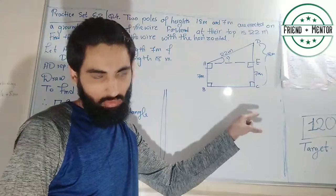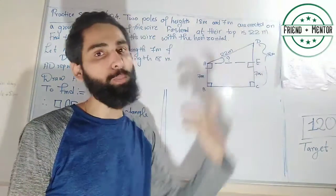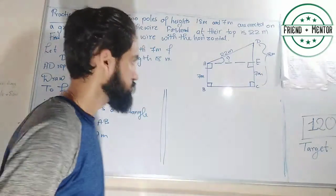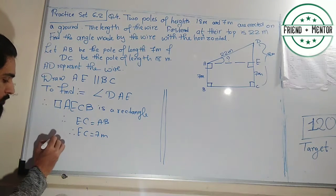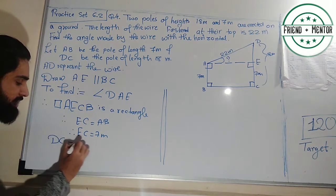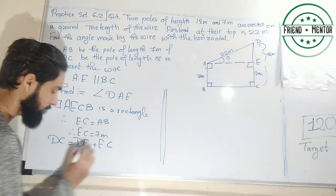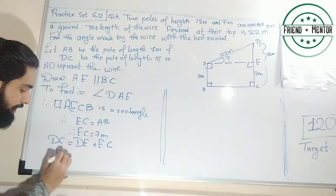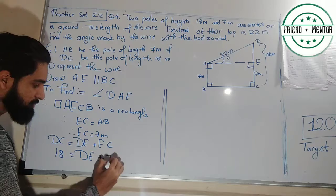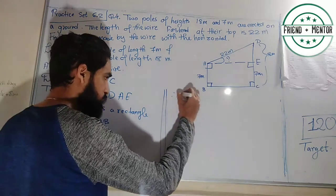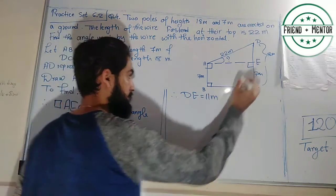The full height is 18 meters. To find DE, we go from D to E plus E to C — that equals 18 meters. Since EC is 7 meters, DE is 18 minus 7, therefore DE is equal to 11 meters.